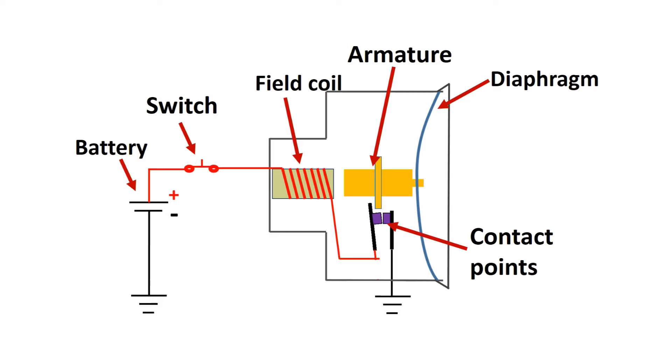When current flows through the field coil, a magnetic field is generated that attracts the movable armature. The diaphragm is connected to and moves with the armature. The movement of the armature causes the contact points to open, breaking the circuit.